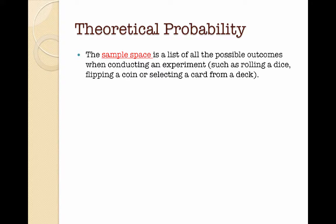The sample space is a list of all the possible outcomes when conducting an experiment, such as rolling a dice, flipping a coin, or selecting a card from a deck.